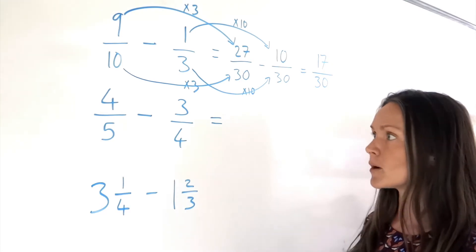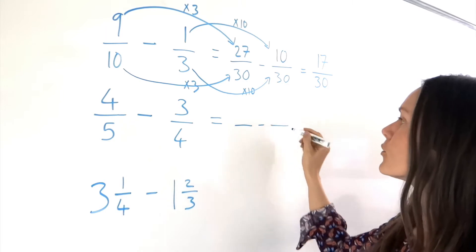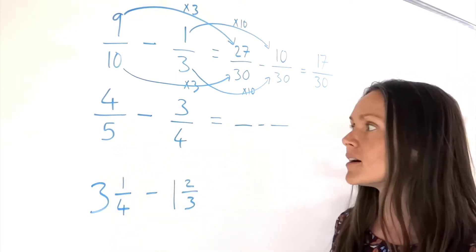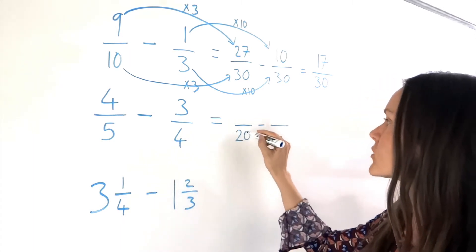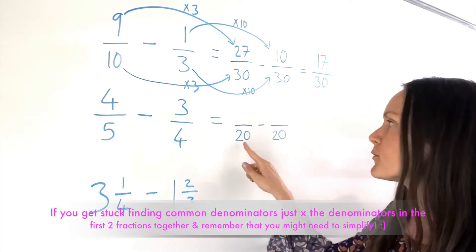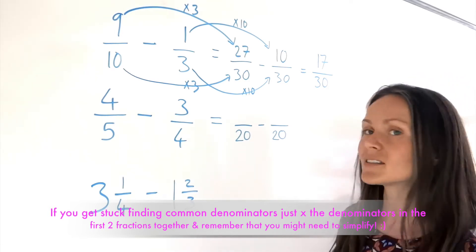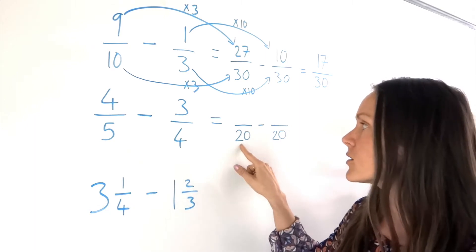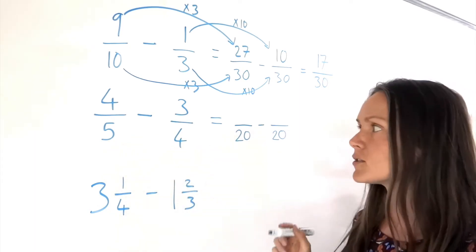Now onto the second example. We're looking for the LCM — the lowest common multiple of 5 and 4 — so the smallest number that both 5 and 4 fit into exactly. In this one, it's 20. If you're good at your times tables, you should be able to find these numbers quite quickly. But like I said, it doesn't matter if you don't find the lowest common multiple, as long as it's a number that both fit into exactly.